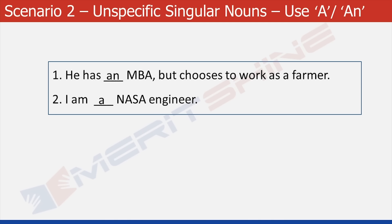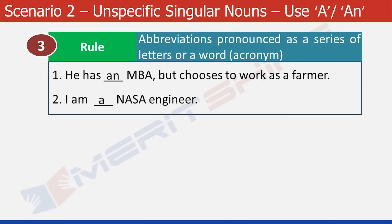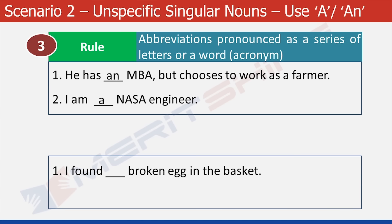So we will have 'a NASA engineer' and not 'an NASA engineer'. Be careful to see if the abbreviation is pronounced as a series of letters or as a single word — an acronym. Try this: I found dash broken egg in the basket. It would take A, because though the article is used before 'egg', the choice depends on the sound of the word it directly precedes — 'broken' — and hence it takes A.